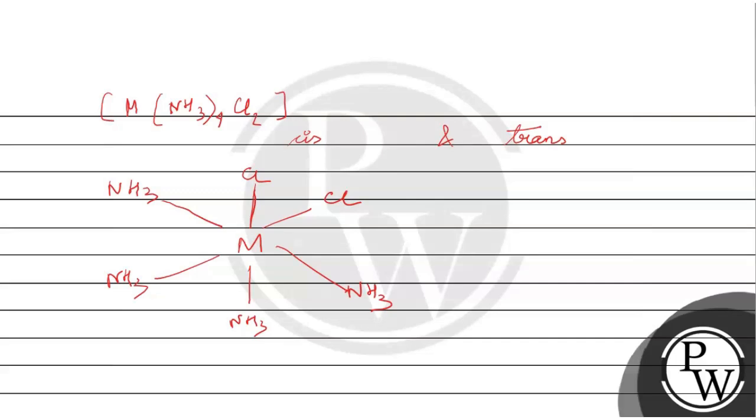This is 90 degree angle. Trans will be adjacent, it means it will be almost 180 degree. It has a square planar structure. So this is 90 degree and this is 180 degree. And one thing you remember.